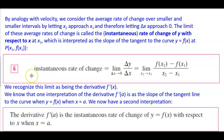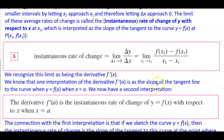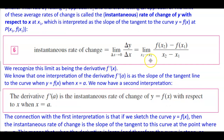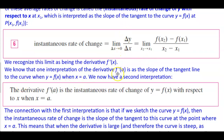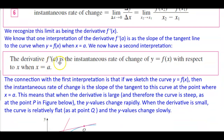Definition 6: the instantaneous rate of change is equal to the limit as delta x approaches 0 of delta y divided by delta x, which is equal to the limit as x2 approaches x1 of f of x2 minus f of x1 divided by x2 minus x1. We recognize this limit as being the derivative f prime of x. The derivative f prime of a is the instantaneous rate of change of y equals f of x with respect to x when x is equal to a.